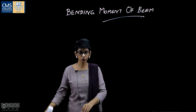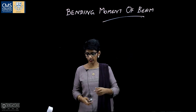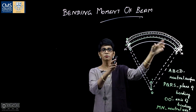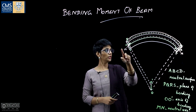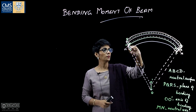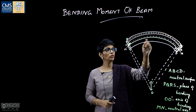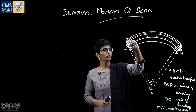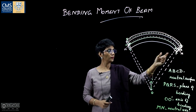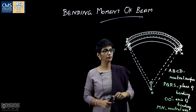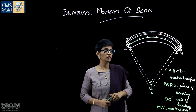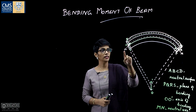To understand more, let us draw another figure. In this figure, the beam is bent with some force, and the neutral surface is marked as A, B, C, D. In this neutral surface there is no elongation or compression. The plane of bending is P, Q, R, S, and O–O′ is the axis of bending. This plane of bending and the neutral surface intersect at the neutral axis, marked as M, N.